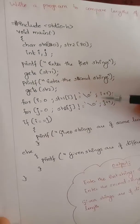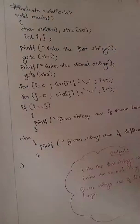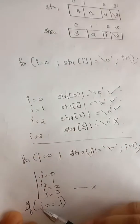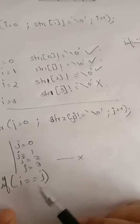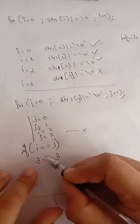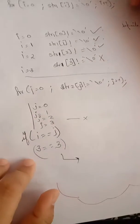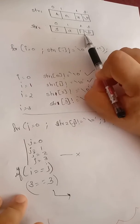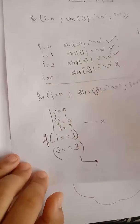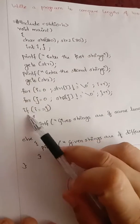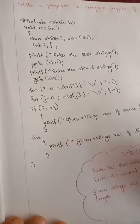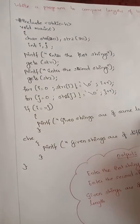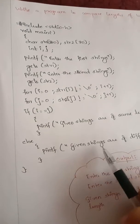Now we are checking if i is equal to j. In this example, the final i value is 3 and the final j value is 3. If i is equal to j, that means the strings are of the same length — here both string lengths are 3. Coming to the program: after executing both for loops, you check the condition if i equals j. If true, you print 'given strings are of same length'; else you print 'given strings are of different length'.